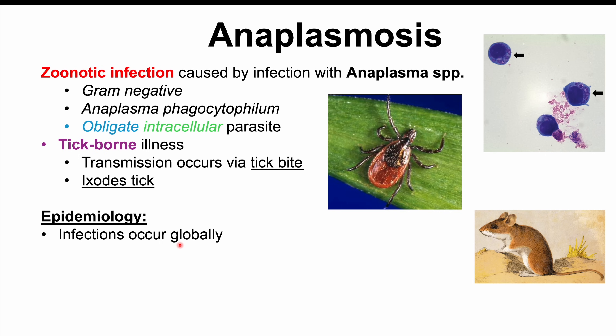These infections occur globally. In the United States, they're mostly reported in the upper Midwest and the Northeast. They've also been reported in Northern Europe and Southeast Asia. Interestingly, global serological studies have found relatively high levels of antibodies against this bacteria in certain populations — for example, 15% of people in Northwest Wisconsin and 17% of Slovenians. This suggests anaplasmosis may be more common than recognized, with many infections being subclinical.